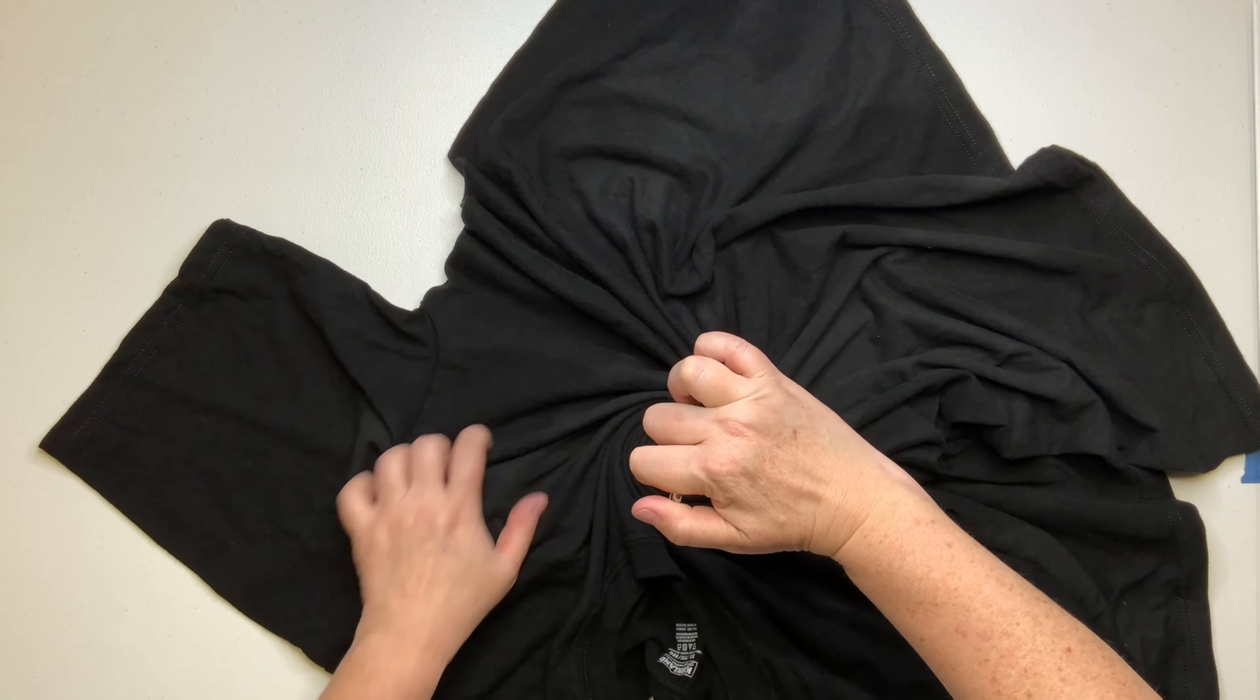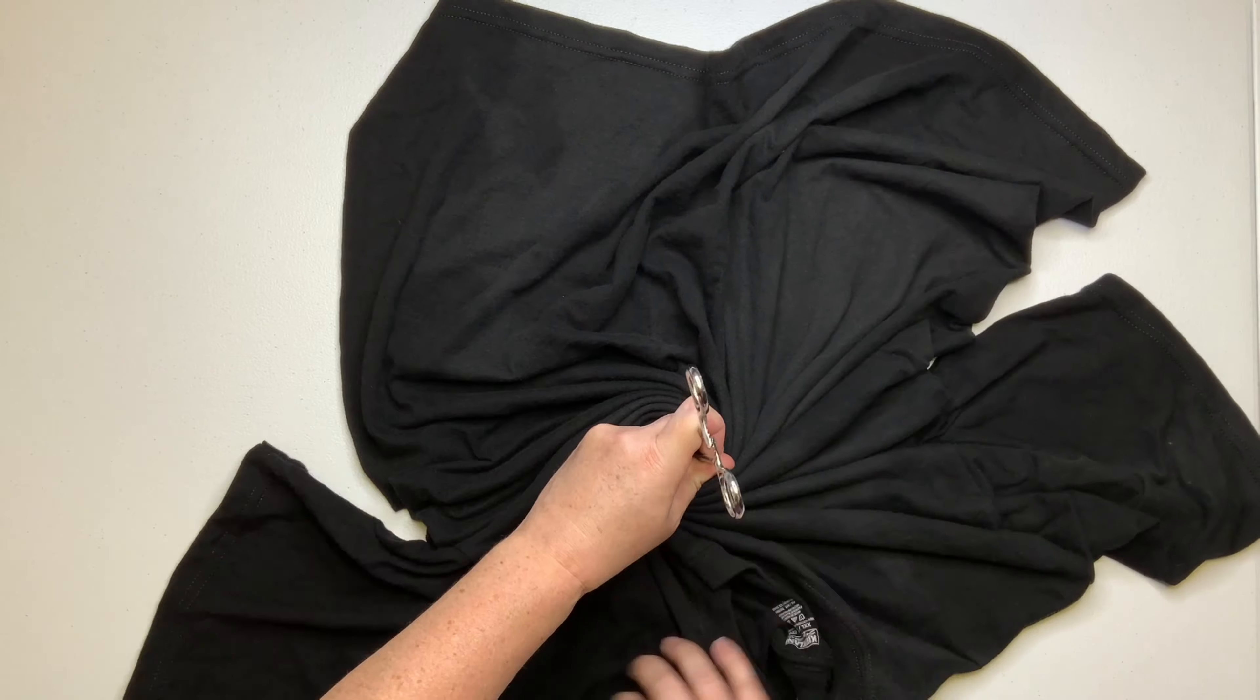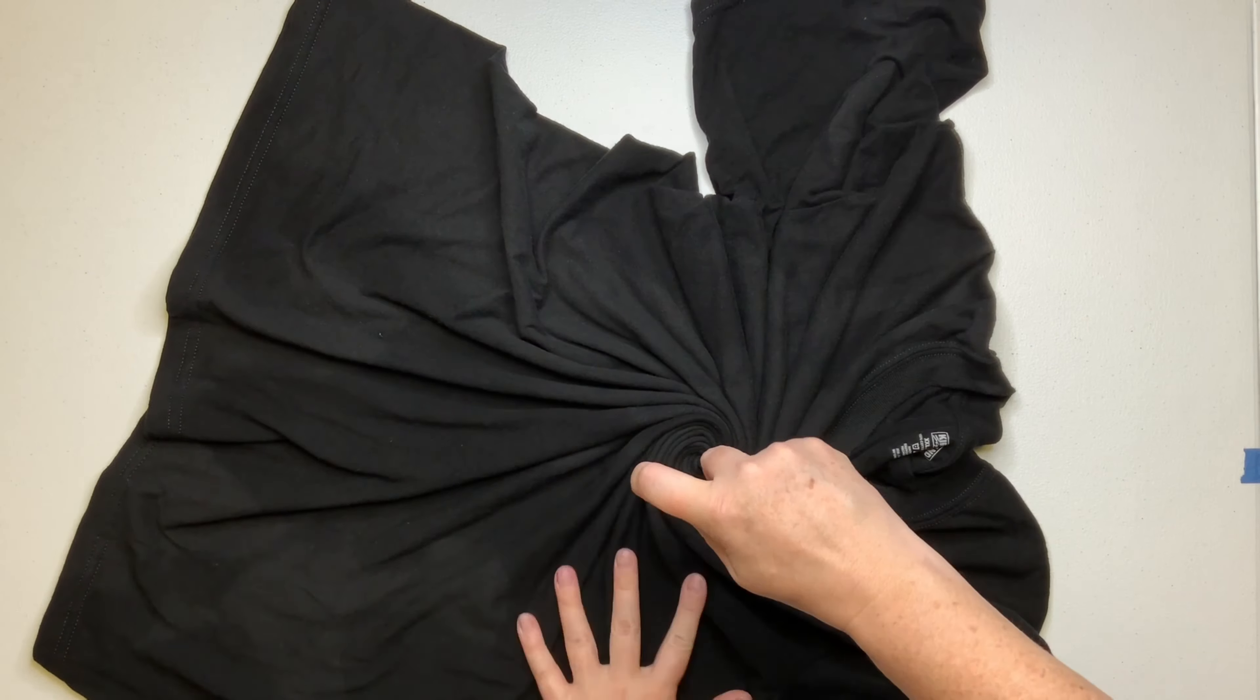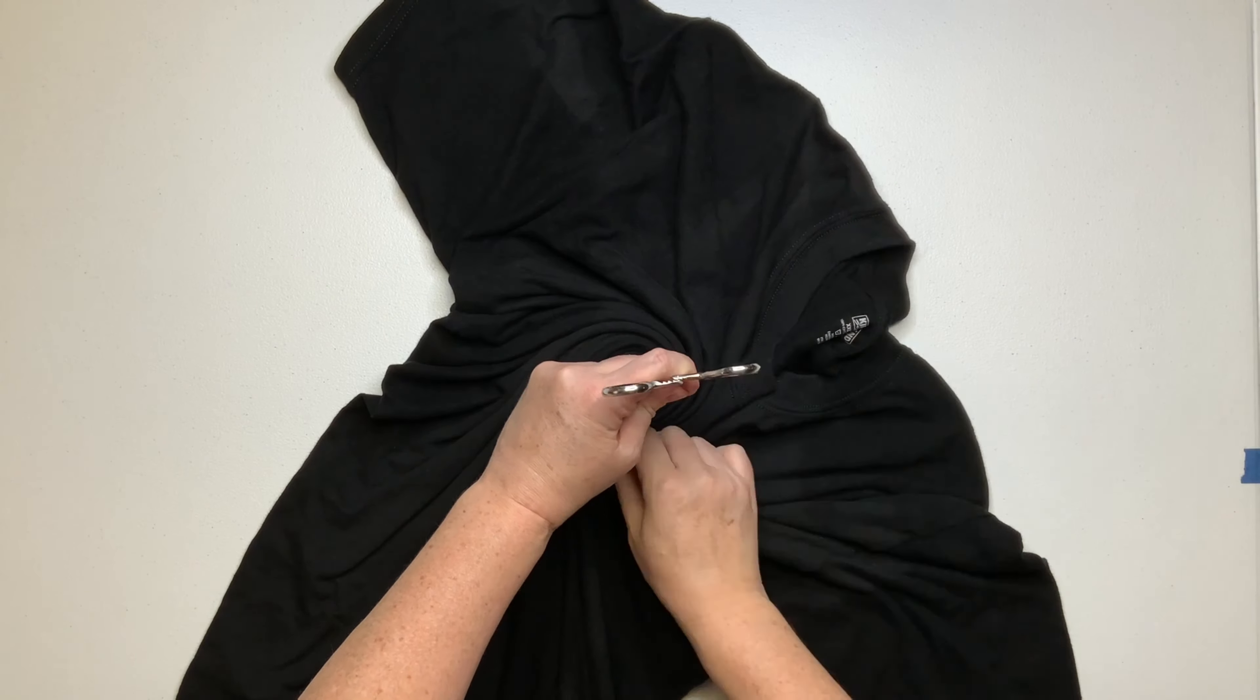I'm using a hemostat to create my spiral. If you don't have a hemostat you can use a fork. If you don't want to use a fork you can use your fingers. It's whichever you prefer.